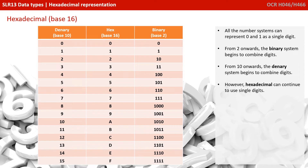This continues all the way up to the denary value 15, which is the hex equivalent F, and the binary equivalent 1111. Of course, we can carry on going above that, and as soon as we do, hex no longer has a single digit which can represent a value, so we'd have to start combining values just like we have been in denary and binary.